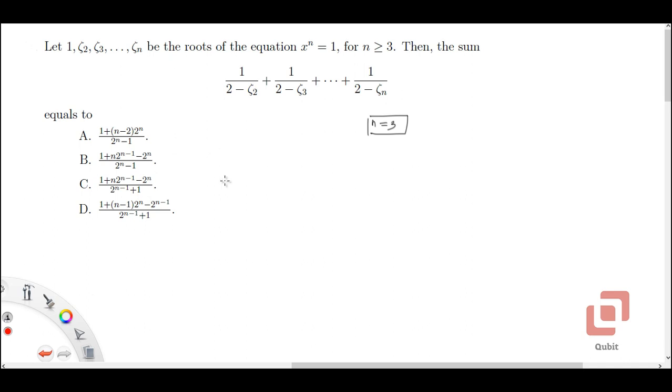Let's start with option A. In option A, if I substitute n equal to 3, then I am going to get (1 + 1 × 8) divided by 7, so that is 8/7. In option B, if we substitute n equal to 3, then the denominator is 7. And now the numerator is 1 + 3 × 4 - 8. So it will be 12 - 8 + 1, so that is 5/7.